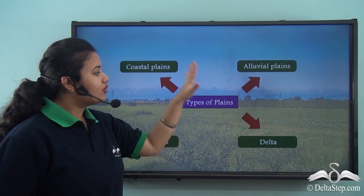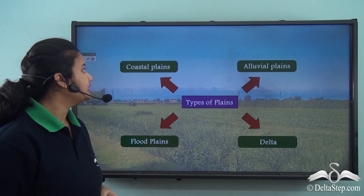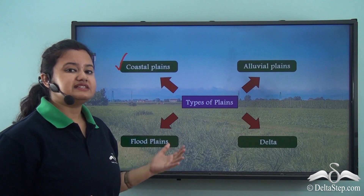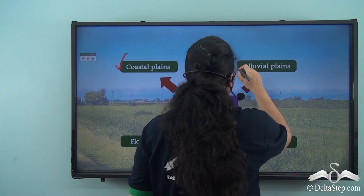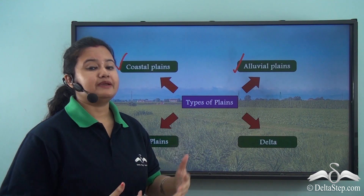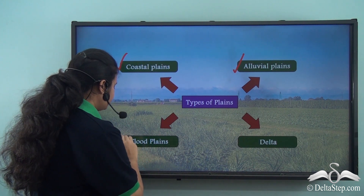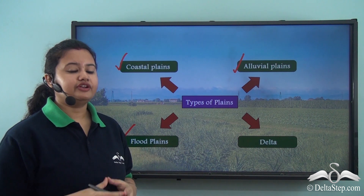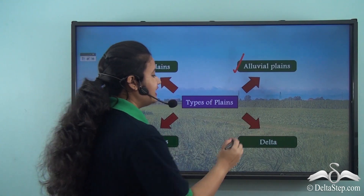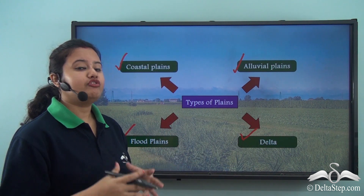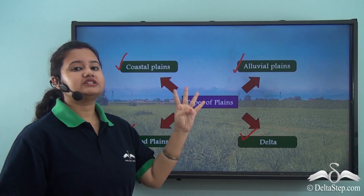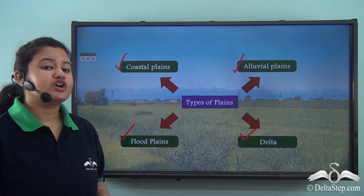To summarize, we discussed four types of plains: coastal plains, found near the coast along the margins of seas or oceans; alluvial plains, formed due to rich deposition of alluvium brought by rivers; flood plains, formed at the middle course of a river when it overflows its banks; and delta, a triangular-shaped plain formed at the mouth of a river where it meets a sea or ocean.